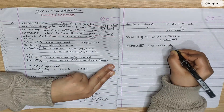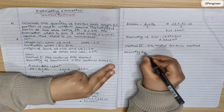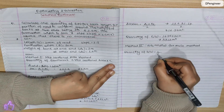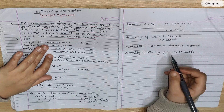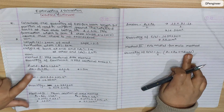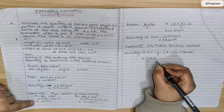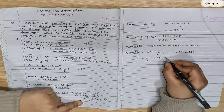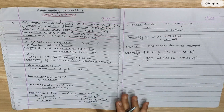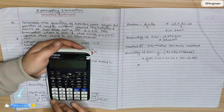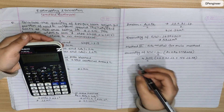Method 3: prismoidal formula method. Formula: quantity of earthwork equals (L divided by 6) into (A1 plus A2 plus 4 times A_mid). Substituting values: (200 divided by 6) into (12 plus 21.12 plus 4 into 16.38). Calculating gives the result.